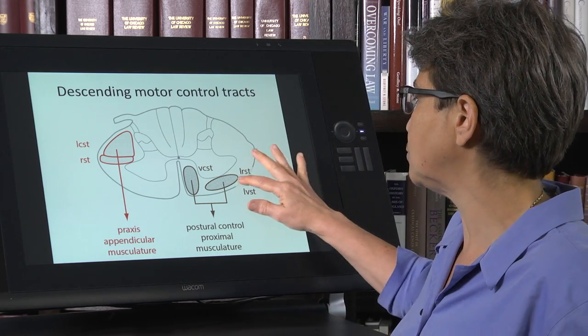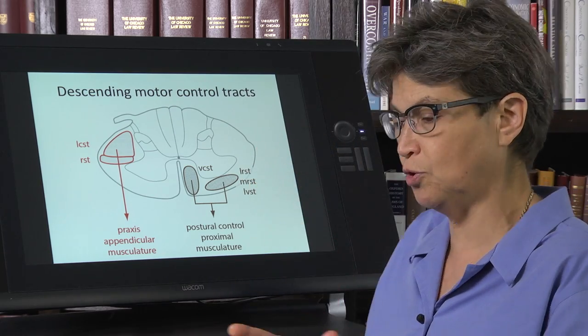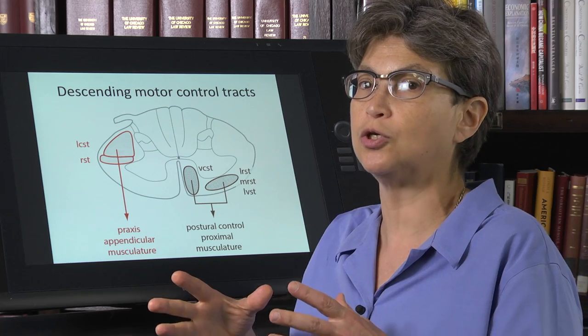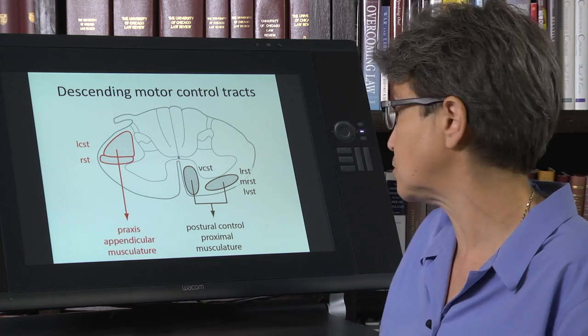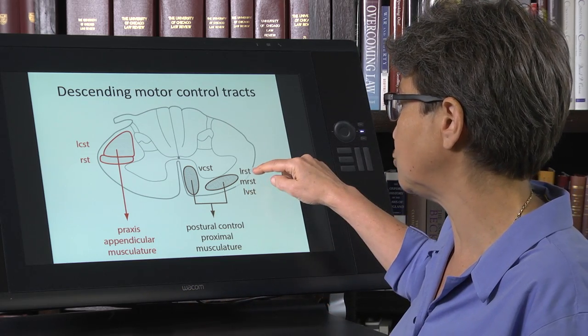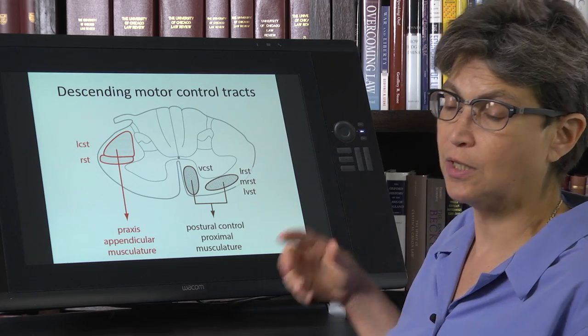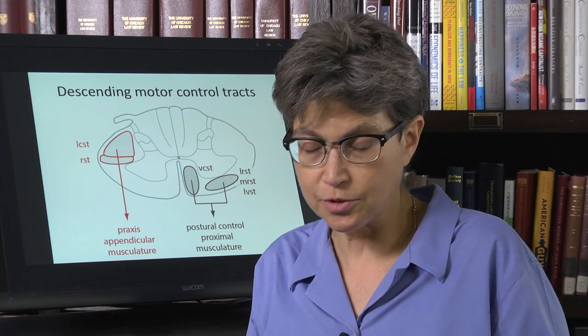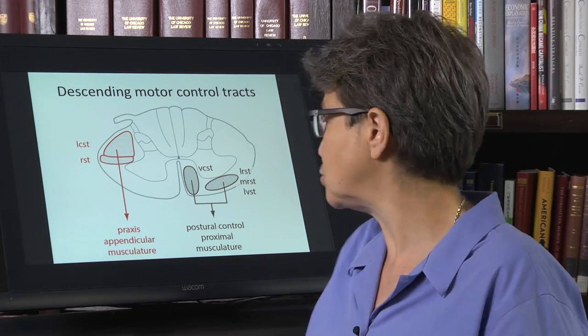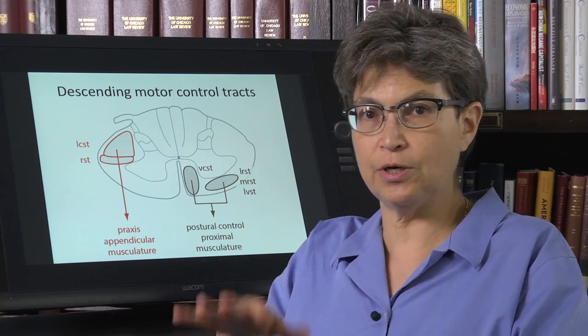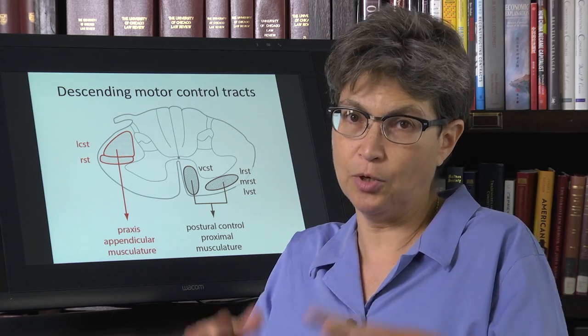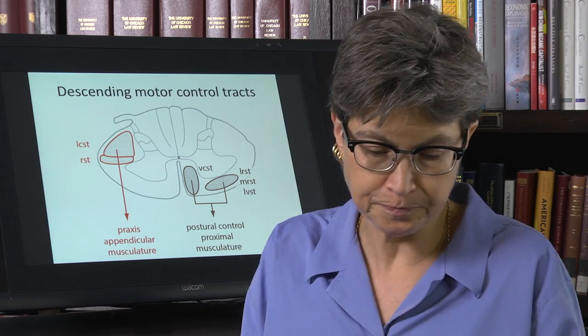And the medial reticulospinal tract is mostly concerned with exciting flexors, whereas the lateral vestibulospinal tract and the lateral reticulospinal tract excite extensors. And so they're in a nice balance under normal circumstances.